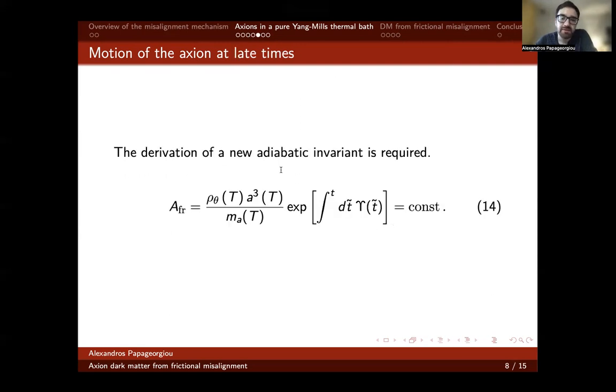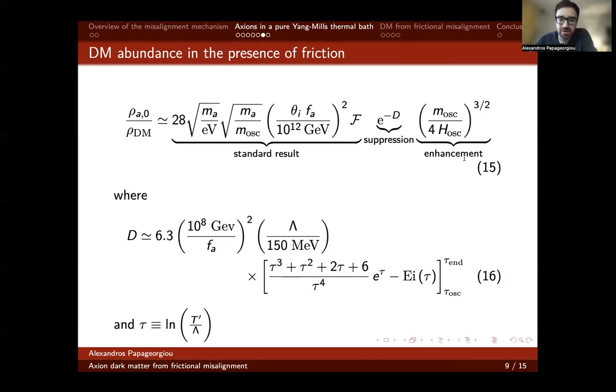At late times, the main change is that we need to derive a new adiabatic invariant valid under the presence of friction. The expression for this adiabatic invariant is the same as the standard case, only it includes this additional factor. Computing this additional factor is the bulk of the calculational part of our work. I will not bore you with all the details. I'm going to show you the final result, which is equation 15. The final result can be broken down into three parts: one is the standard result, then we have an additional suppression factor, and we also have an enhancement factor.